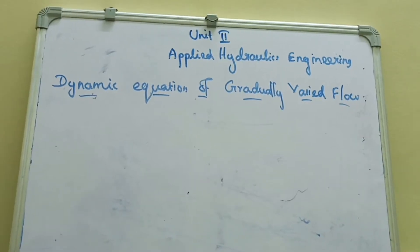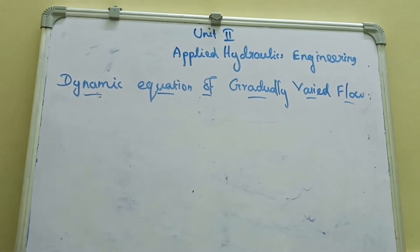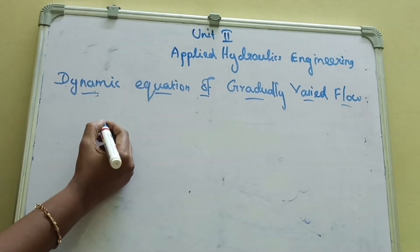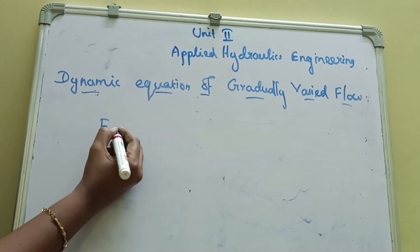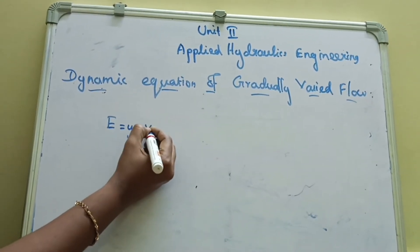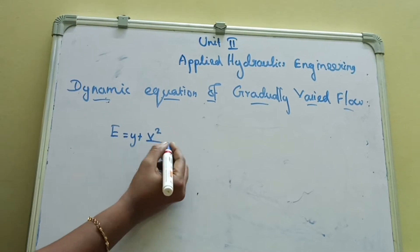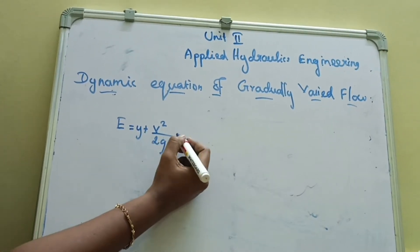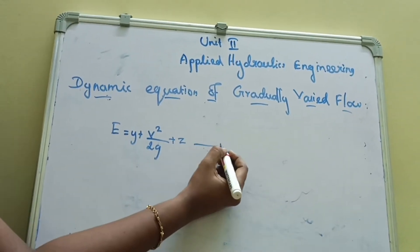This is the flow diagram. For the derivation of the dynamic equation of gradually varied flow, according to Bernoulli's theorem, we know the equation of energy: E equals y plus v-squared divided by 2g plus z.